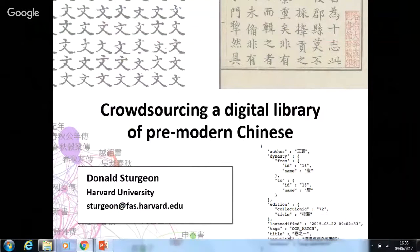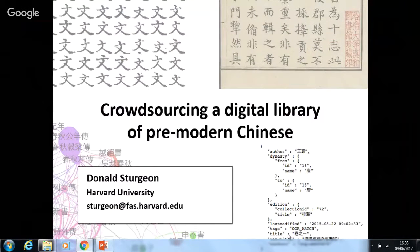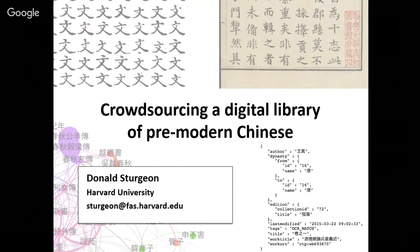Thanks everyone for coming and thanks for organising this session. I'm going to be talking about my experiences with crowdsourcing a digital library for pre-modern Chinese texts. The background to this is a project that I've been running since 2005 called the Chinese Text Project. It's an online archive, it's open access. All of the interface and explanations available online are also available in English.